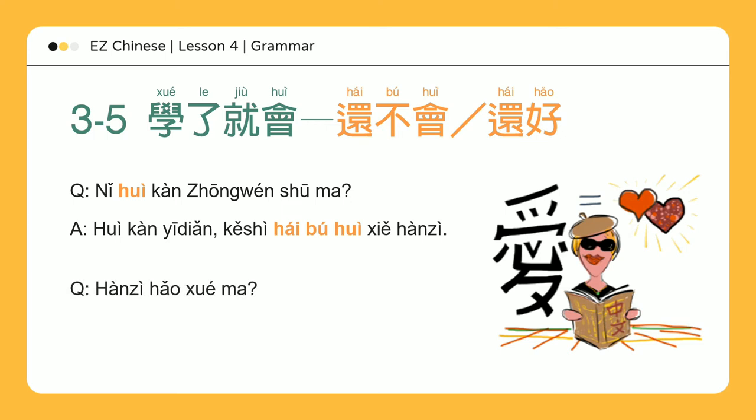汉字好学吗? — Are Chinese characters easy to learn? 还好，学了就会 — They're all right. Once you study them, you'll know how.